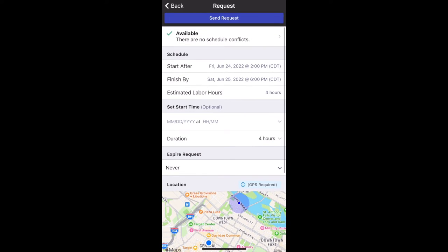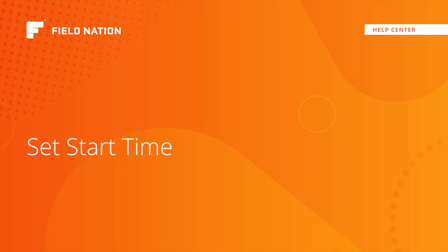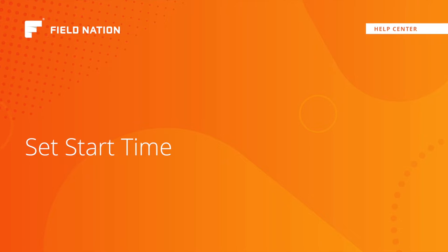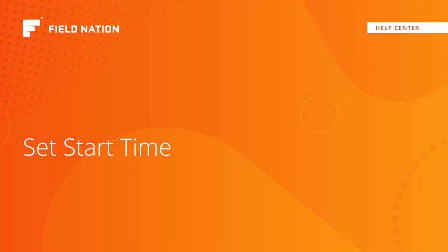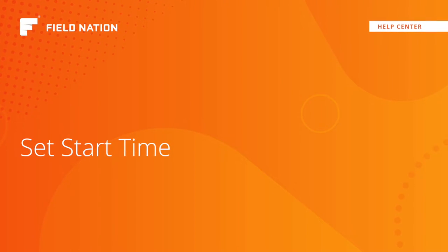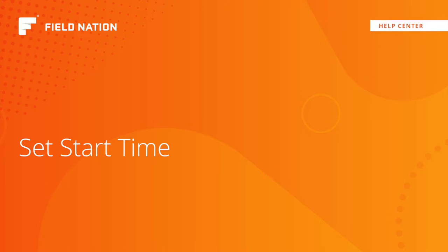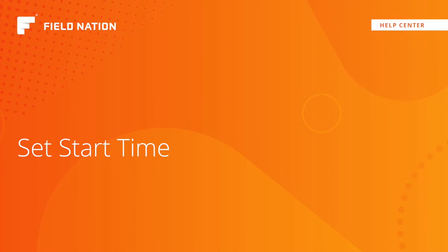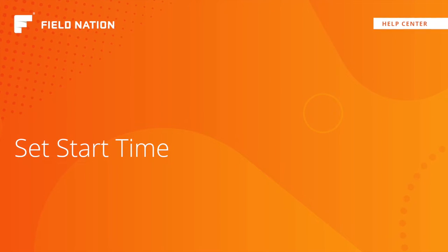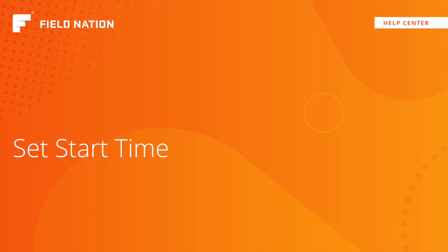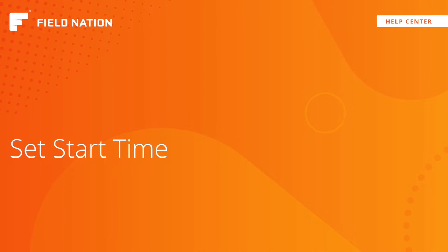You do have the option to set your start time on this screen, but you don't have to — it'll also prompt you to set your start time after you send the request. For work orders with a set start time or a hard start, the start time will default to whatever the scheduled time the buyer has input. In that case, you would not be able to enter a different start time other than what's already there.